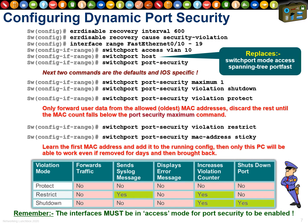The three violation states are shutdown, protect, and restrict. The biggest difference between protect and restrict is syslog messages. With protect, you'll never know a violation occurred. With restrict, every time a MAC address is dropped, a message is sent to your syslog server. You can then run a Splunk report asking: 'Show me the last 24 hours of port-security violation restrict messages and where they occurred.' Very useful.